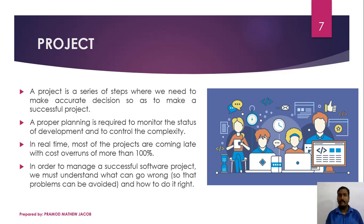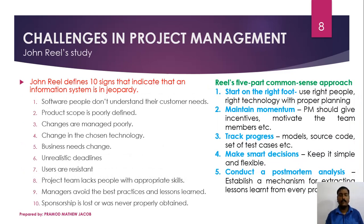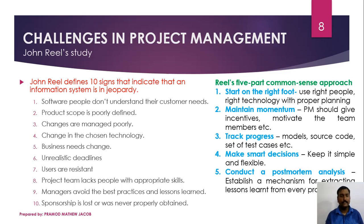Famous software scientist John Reel performed a study to identify challenges associated with software project management. He identified 10 signs that may put software in jeopardy: people don't understand customer needs; product scope is poorly defined; changes are not managed properly; chosen technology changes; business needs change; unrealistic deadlines; users resist new changes; the project team lacks appropriate skills; managers avoid best practices; and sponsorship is lost or budget is insufficient.